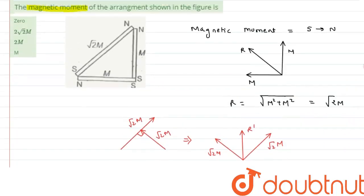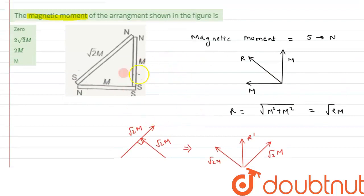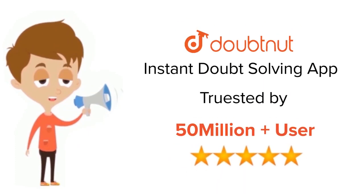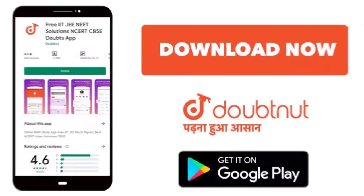So the net magnetic moment of the whole system or arrangement is 2M, which matches with option C. So I hope you have understood the concept well and thank you for watching. For class 6th to 12th, IIT-JEE and NEET level, trusted by more than 5 crore students, download Doubtnet today.